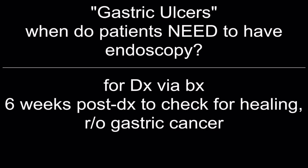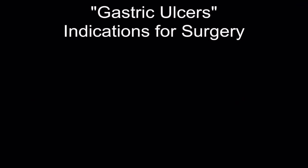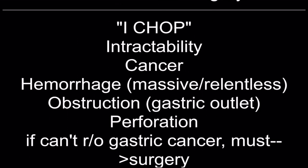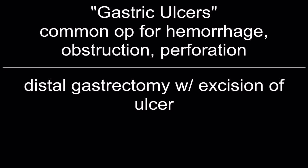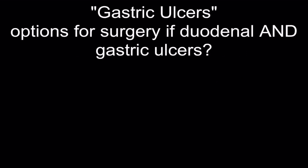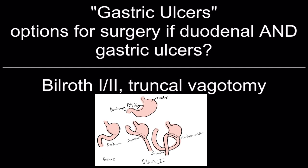Indications for surgery in gastric ulcers — I CHOP: Intractability, Cancer, Hemorrhage (massive/relentless), Obstruction (gastric outlet obstruction), Perforation, and if you can't rule out gastric cancer. Common operation for hemorrhage, obstruction, and perforation: distal gastrectomy with excision of ulcer. Options if duodenal and gastric ulcers co-exist: Billroth 1 and 2 with truncal vagotomy.